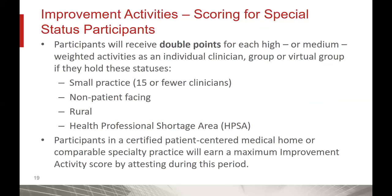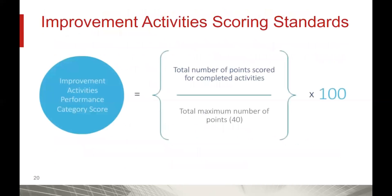To highlight special considerations for special status participants: if you are a clinician in a small practice of 15 or fewer, are non-patient facing, or are practicing in a rural area or a HPSA, you will receive double points for each high or medium-weighted activity as an individual clinician, group, or virtual group. Participants in the certified patient medical home model or comparable specialty practice will earn the maximum improvement activity score by attesting during this period — and again, you must be certified. With that, I'll turn it over to Brian to walk through the scoring examples.